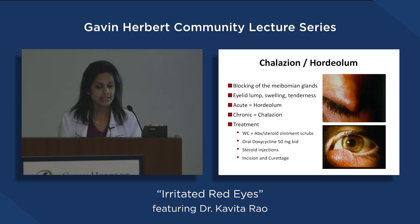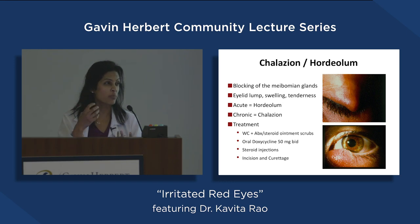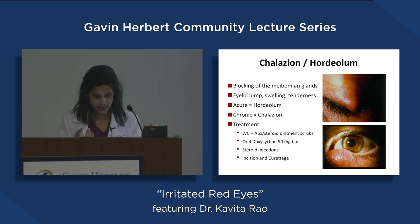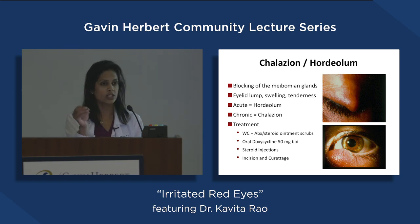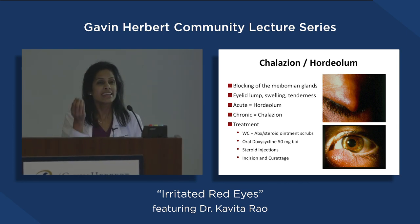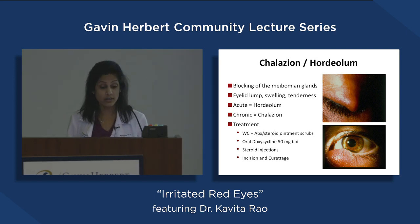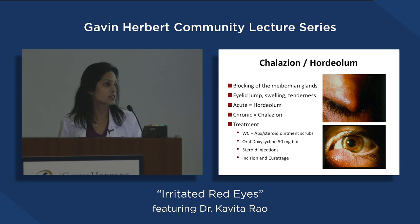Chalazion or hordeolum — similar to a stye — goes along with blepharitis. When the gland gets so plugged up and inflamed, it forms a bump around the eyelid. Usually it's something benign, nothing really concerning. We tell people to treat it with a hot washcloth — just like a pimple, heat to that area will help open the pore and release secretions. Sometimes, if it doesn't resolve after months, we have to make a small cut and drain the gland.